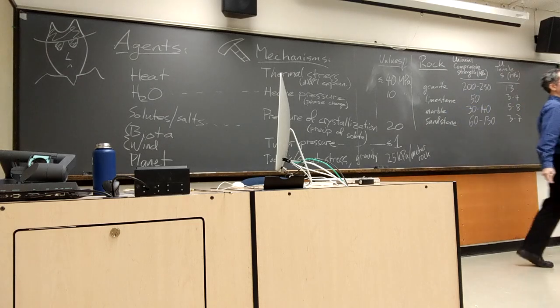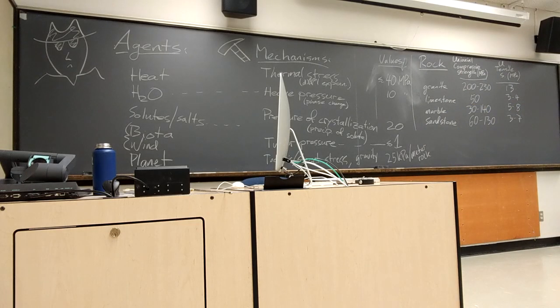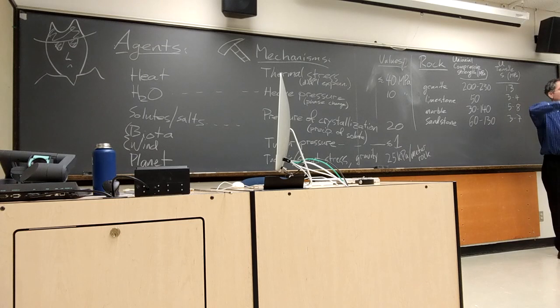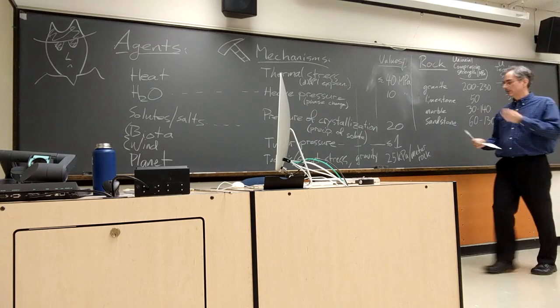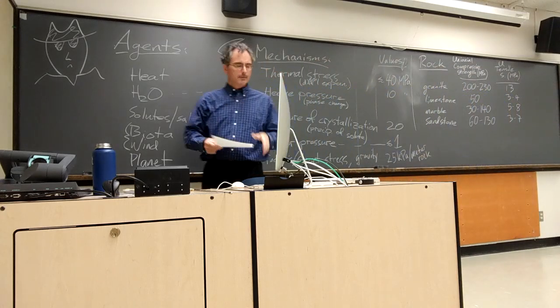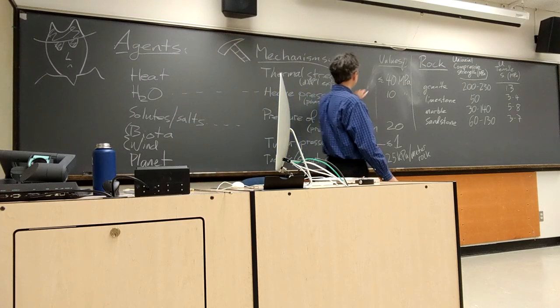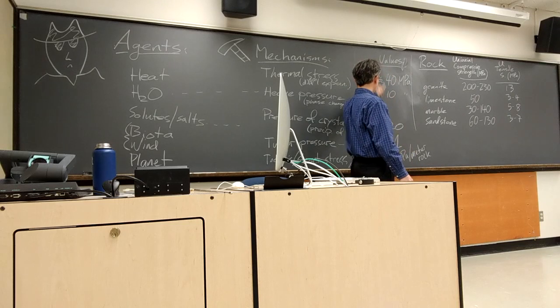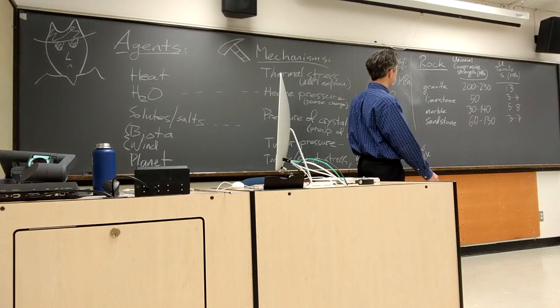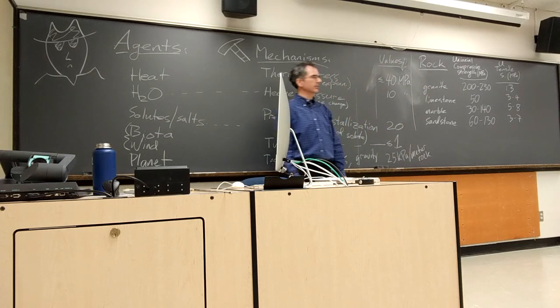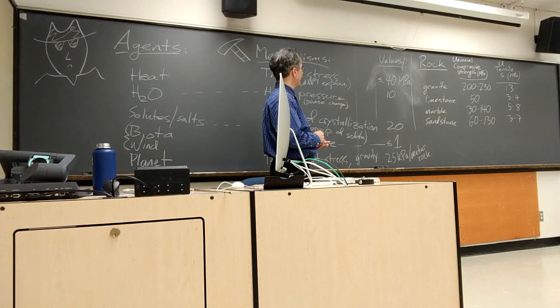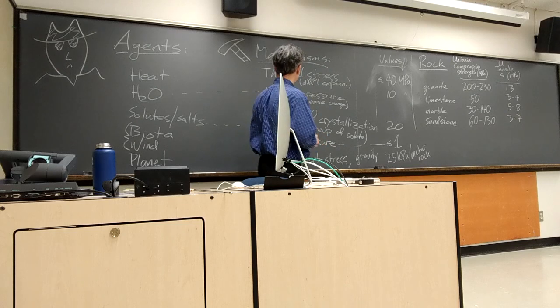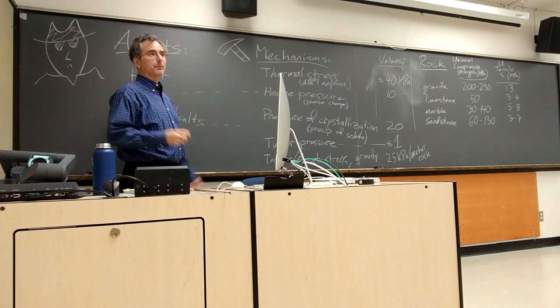That is overburden pressure, but also if we're on a cliff face, what's the pressure of the rock above us on a cliff? Okay, so all but the turgor pressure are plenty sufficient to deal with these sorts of tensile strengths that we've got up there. And, so now we just need to, you know, I could just stop there, but that wouldn't be any fun, would it? So, personally, if I were you, I'd want to know, well, what the heck? Like, how can I generate, and what are we talking about with like heave pressure and pressure crystallization?